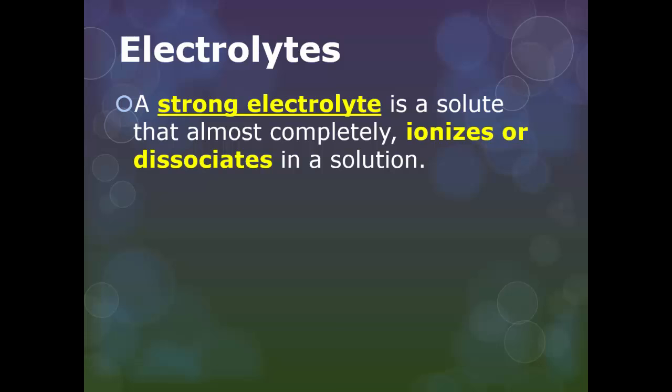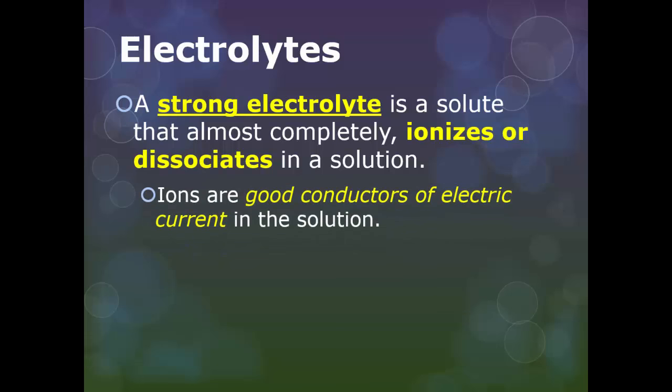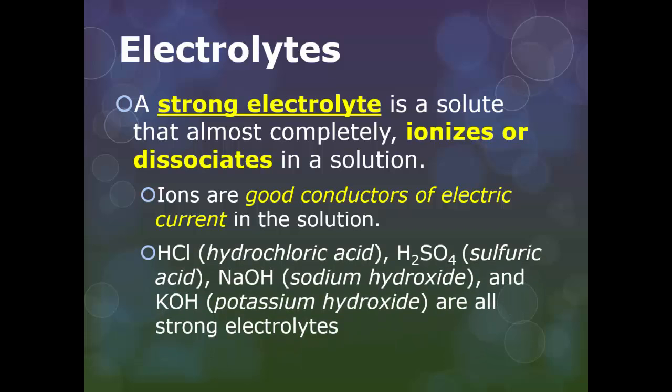A strong electrolyte is a solute that almost completely ionizes or dissociates in a solution. So all those things that we said were salts that dissociated in the water, those are strong electrolytes. Ions are really good conductors of electric current in solution. HCl, sulfuric acid, sodium hydroxide, potassium hydroxide are all strong electrolytes. Because they're able to conduct an electric current in the water. Because the ions have separated and now the electric current has something to bounce around on. But when H2SO4 dissociates, does it make sulfur ions and oxygen ions or does it stay polyatomic? Polyatomic.